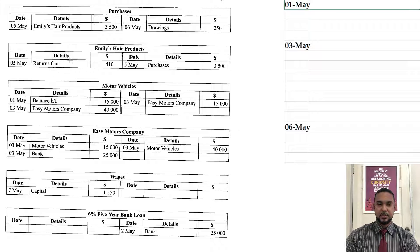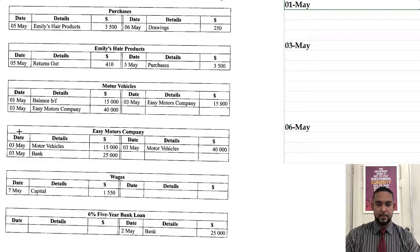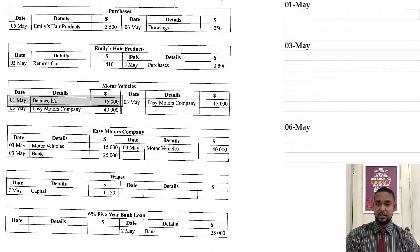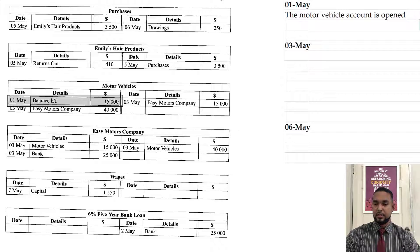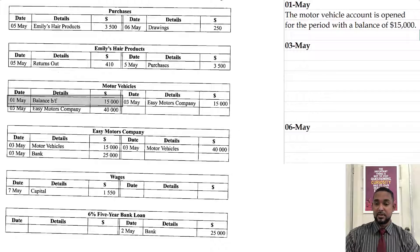So on the 1st of May — let's go back to the T-accounts — I'm seeing the 1st of May here and that's the balance brought forward in the motor vehicles account. So that's exactly what that is: the motor vehicle account is opened for the period with a balance of $15,000.